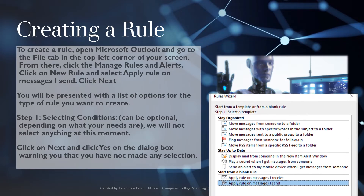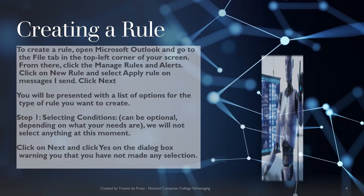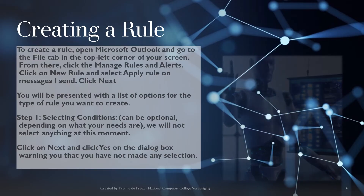You will be presented with a list of options for the types of rules you want to create. In step one, selecting conditions is an optional step depending on what your needs are. Here we will not select anything at this moment. Click Next and then click Yes on the dialog box warning you that you have not made any selections.